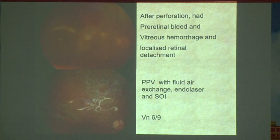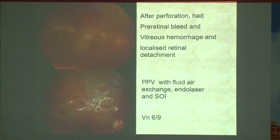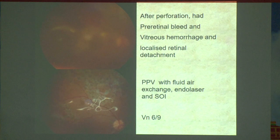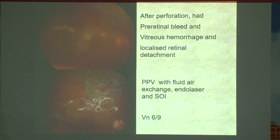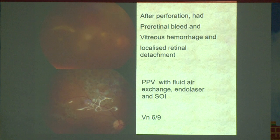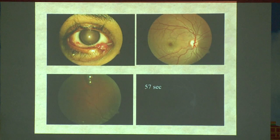After perforation, pre-retinal blood and vitreous hemorrhage were there, with a localized retinal detachment, and we did a vitrectomy with fluid-air exchange and silicone oil. This has a very very good prognosis. If there is a percolating sub-retinal hemorrhage which has moved into the macula, then there is a bad prognosis. Otherwise, this is a very very good prognosis.